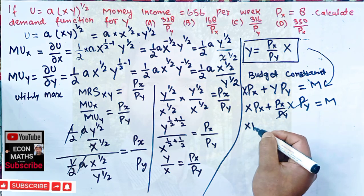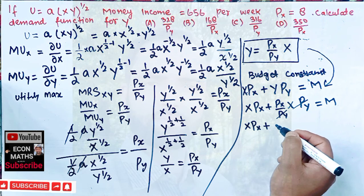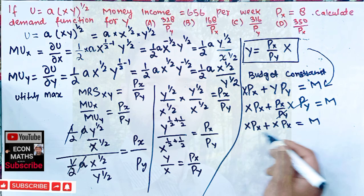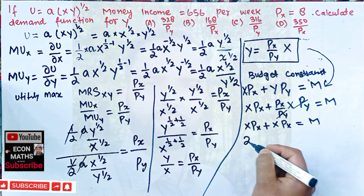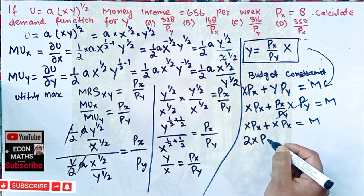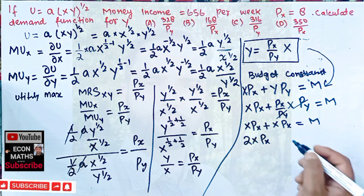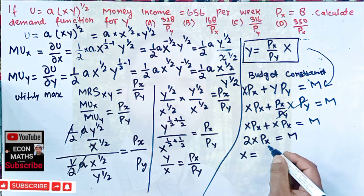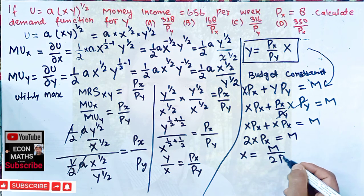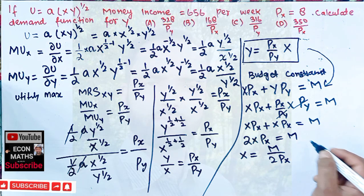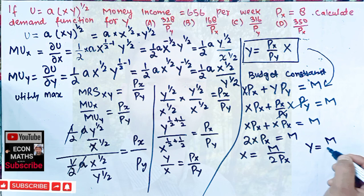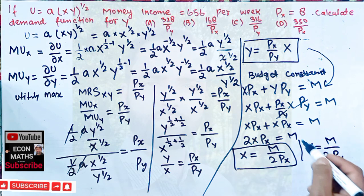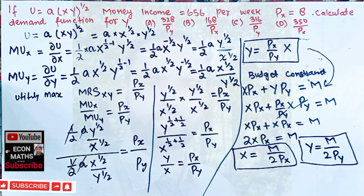We are left with X·Px + X·Px = M, which simplifies to 2·X·Px = M. Therefore X = M / (2·Px). Similarly, the demand function for Y is Y = M / (2·Py).